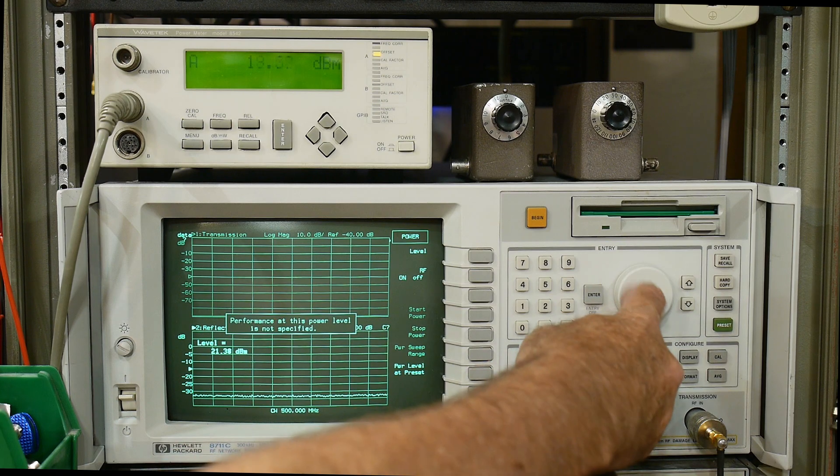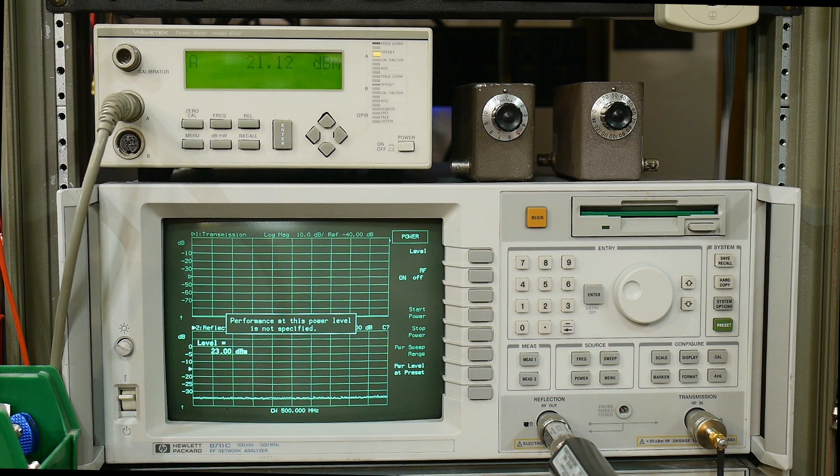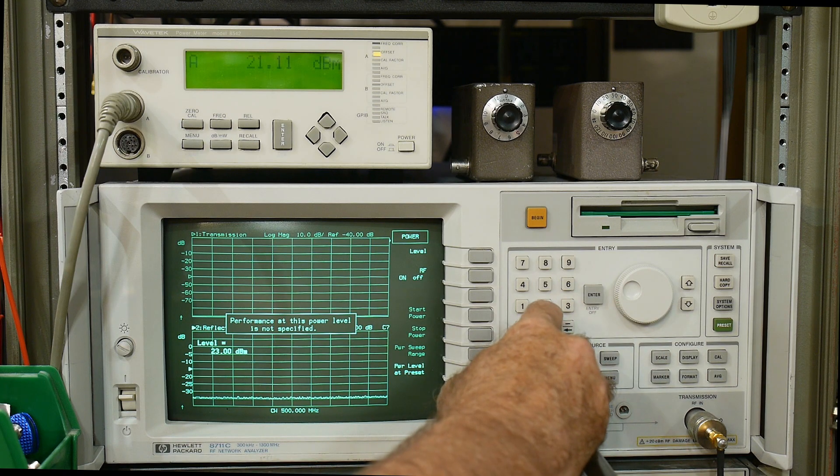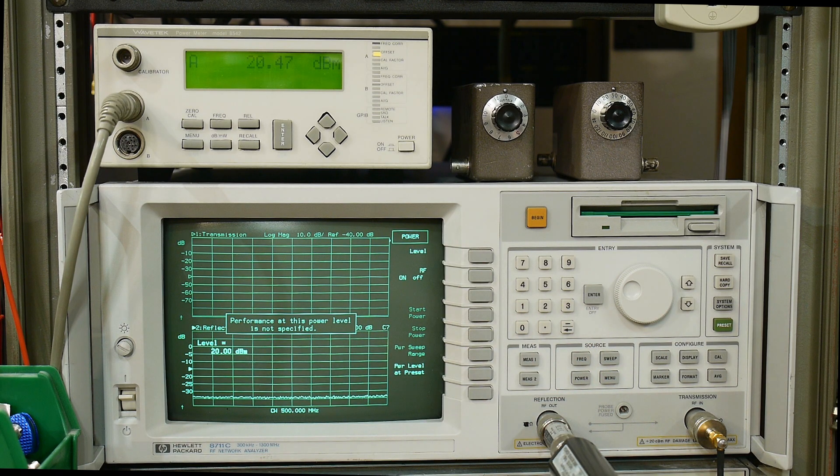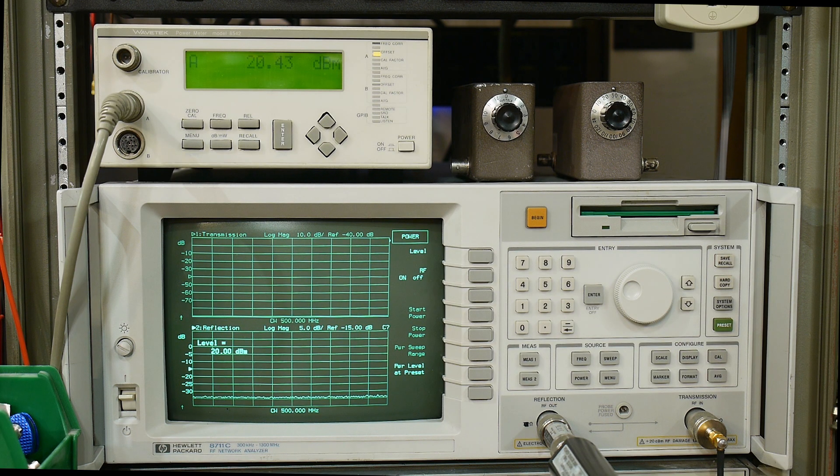And then how high will it actually go all the way, because it says plus 23, but it's only putting out 21. So let's go back to 20. So 20 is fine. So this thing will output plus 20 to minus 50 accurately. So that's good. It also says that it's outputting the power correctly into 50 ohms.